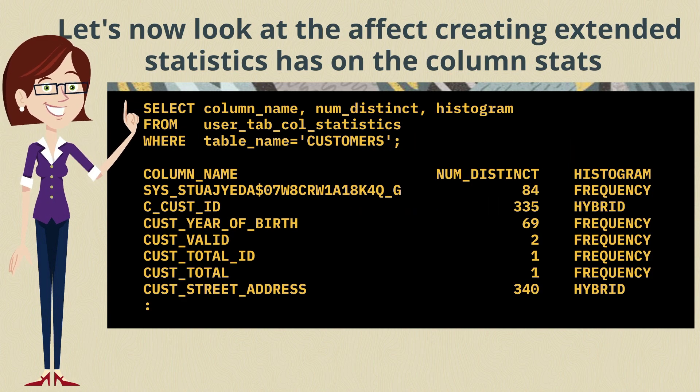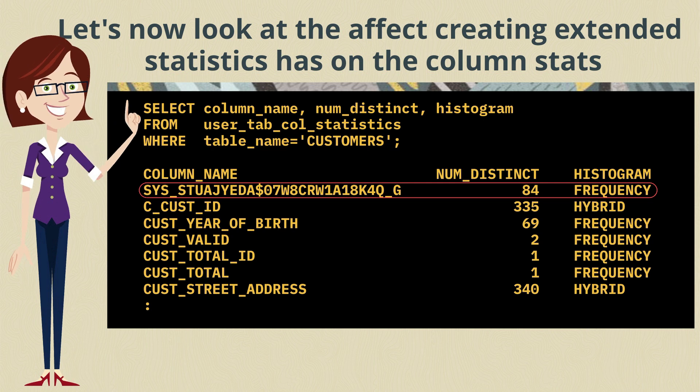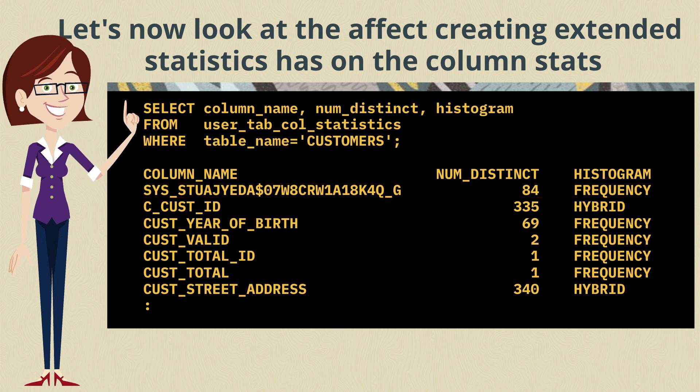If we look under user tab call statistics, after we regather stats, we'll see that system generated virtual column name, and we'll see that it's got all the necessary statistics, things like number of distinct values. We even have a histogram on it.